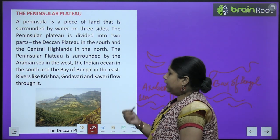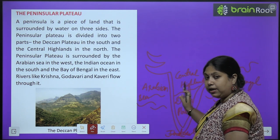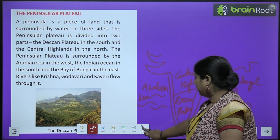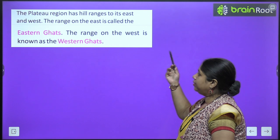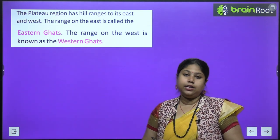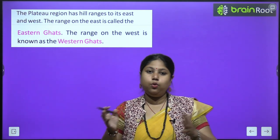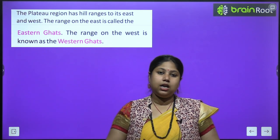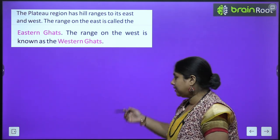Rivers like Krishna, Godavari and Cauvery flow through the plateau region. The plateau region has hill ranges to its east and west. The range to the east is called Eastern Ghats and the range in the west is called Western Ghats. Yaani plateau ke donon taraf — east mein bhi aur west mein bhi — different hill ranges hain. Jo east ki taraf hai use Eastern Ghats aur jo west ki taraf hai use Western Ghats bolte hain.